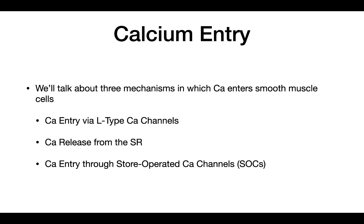At the core of excitation contraction coupling is calcium. The reason why is because when you increase the calcium concentration in the cytosol, this allows contraction to occur inside muscle. In smooth muscle cells, there are three ways we're going to talk about in how calcium is going to enter the cell.